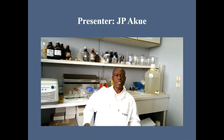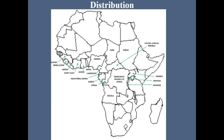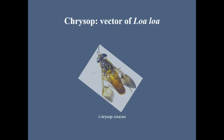Loa Loa is originally a restricted filaria worm from Central Africa and some West African countries. However, several imported cases are being reported all over the world due to human movement. The vector is a fly called Chrysops.